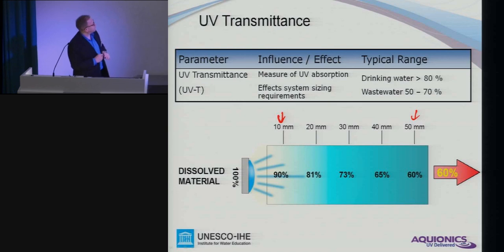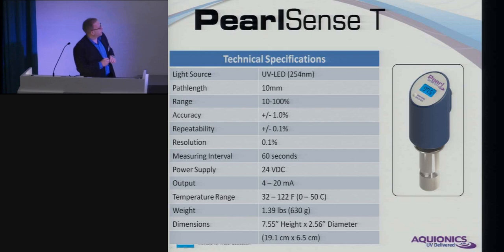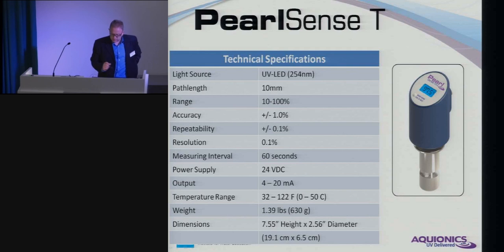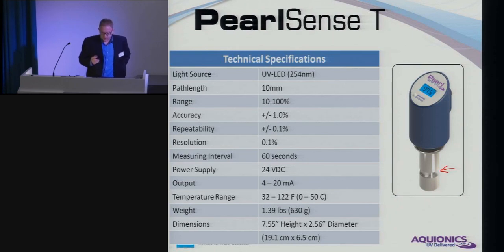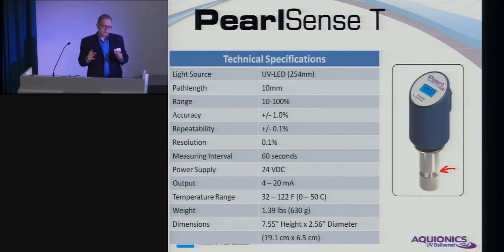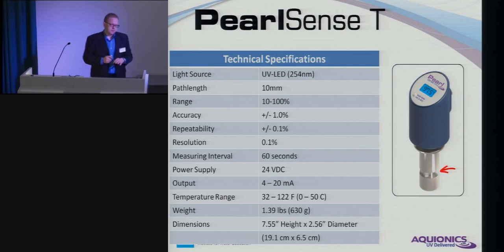The resulting product — and I also have one on display in the hallway — is the Pearl Sense T. It's using one LED. It's still expensive, but we only need one, so it's competitively priced. It measures UVT with a one-centimeter gap, measuring a path length of 10 millimeters. We can measure anything in the range of 10 to 100% UVT, which allows either designing or operating a system. Depending on the testing protocol, the system would be able to dim down or ramp up the lamp power, optimizing power consumption while ensuring enough UV is always applied for proper disinfection.